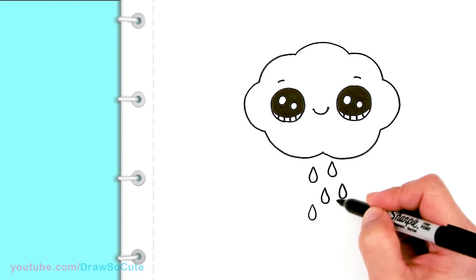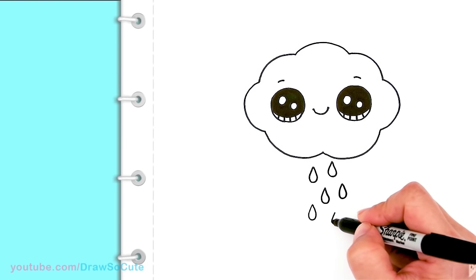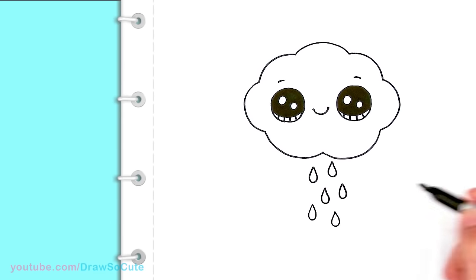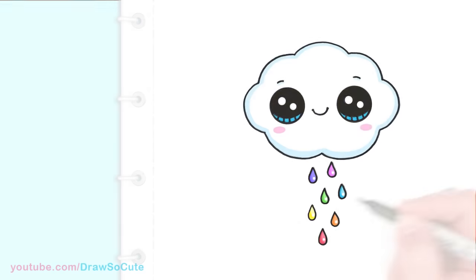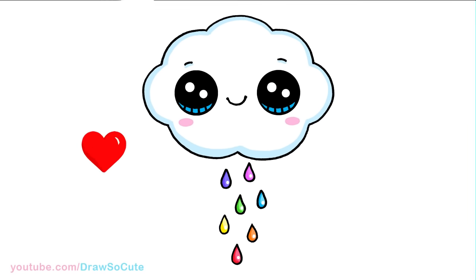So it's basically just a curve that connects to a point. So one, two, three, four, five. Let's see here. One more here and one here. So there, my Draw So Cute rain cloud.